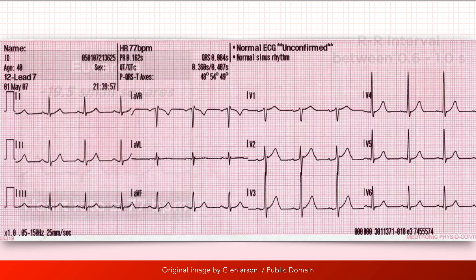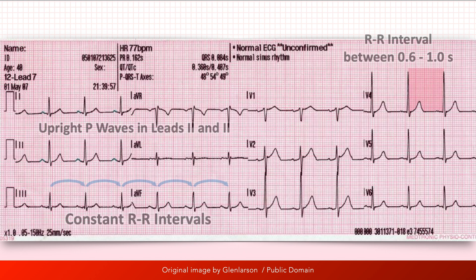So to quickly recap, with sinus rhythm, an upright P wave of constant morphology precedes every QRS complex.